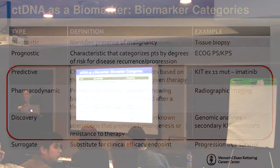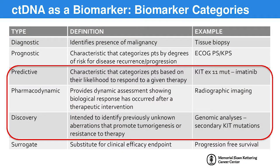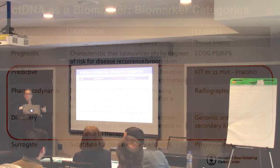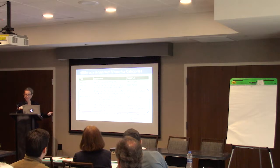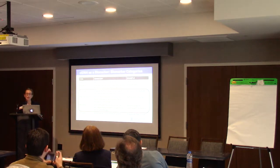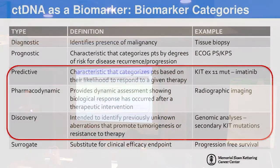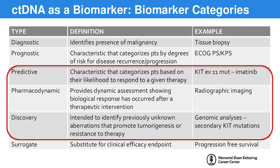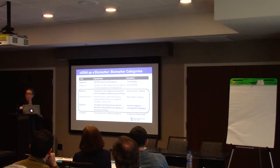ctDNA is a potential biomarker for this disease in that it can be diagnostic and predictive by identifying the KIT exon 11 mutation — we know that imatinib is very useful in this disease setting. It can be pharmacodynamic, providing dynamic assessment showing biological responses after a therapeutic intervention. And it can be discovery in nature, potentially identifying other mechanisms of resistance that may emerge on therapy.